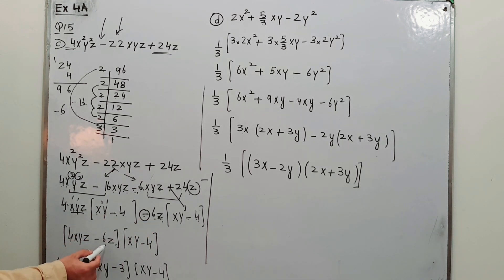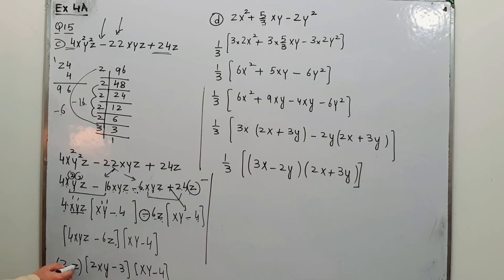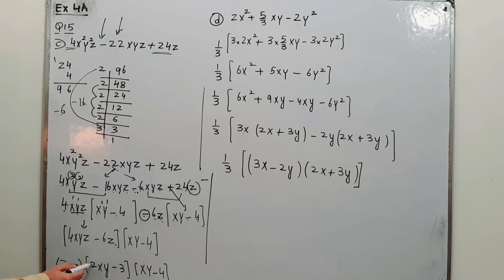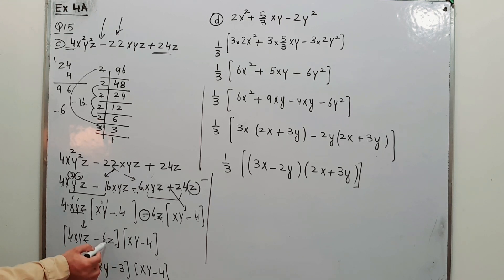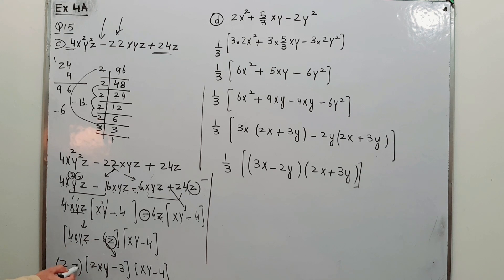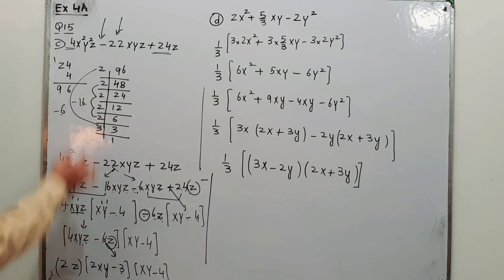We can see there is a common factor: 2 and z are common in the second factor, so 2z is taken out as common. From 4xyz, 2z leaves 2xy; from 6z, 2z leaves 3. So the final factorization for part C is (xy minus 4) times 2z times (2xy minus 3).